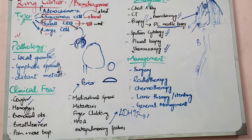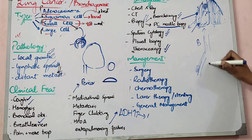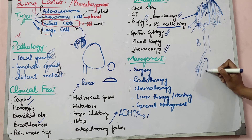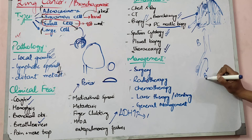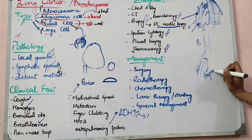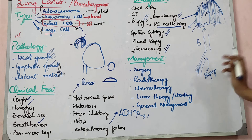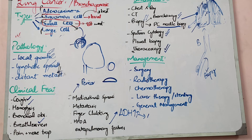Once the diagnosis is established by biopsy, we must stage the cancer — assessing lymph node involvement and distant metastases using CT scans. If there is uncertainty about bone involvement, a bone biopsy is taken. For pericardial involvement, pericardial fluid is sampled. Depending on what type of cancer is found, further checks are performed.